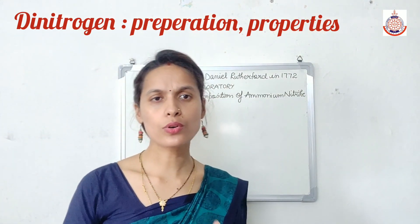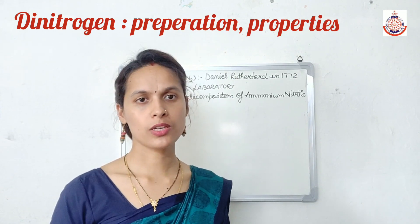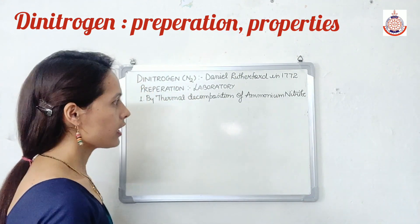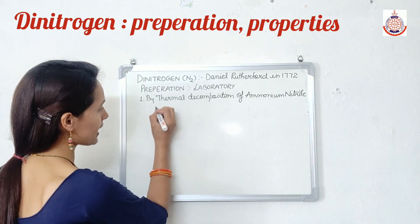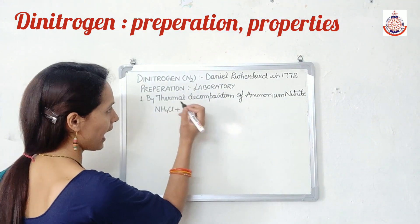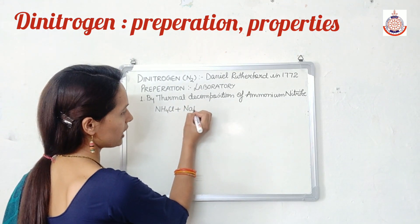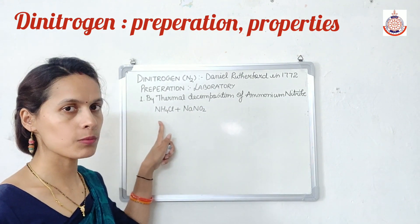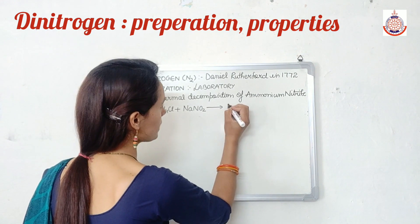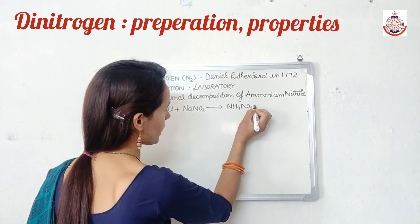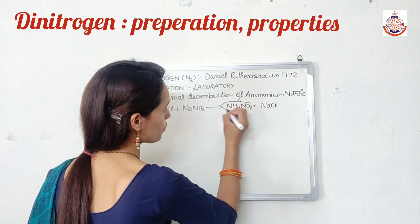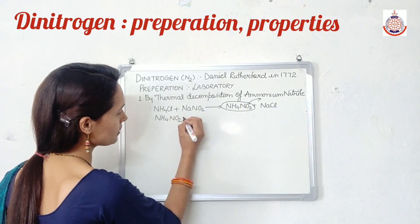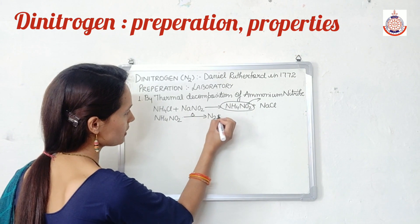Ammonium nitrite is not present in nature. We have to prepare ammonium nitrite on the spot while we are preparing the nitrogen. For the preparation of ammonium nitrite, we will take the equimolar mixture of NH4Cl and NaNO2, which is sodium nitrite. We will get NH4NO2 plus NaCl. This NH4NO2 is ammonium nitrite, and being unstable, it readily decomposes on heating to give N2 plus H2O.